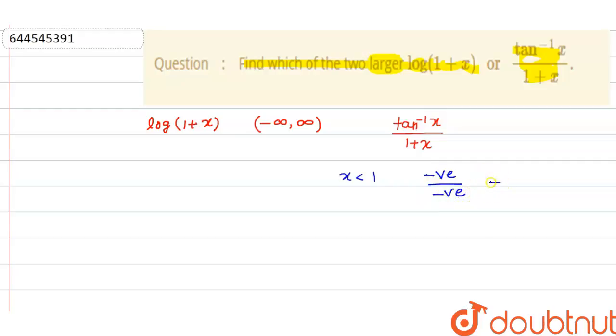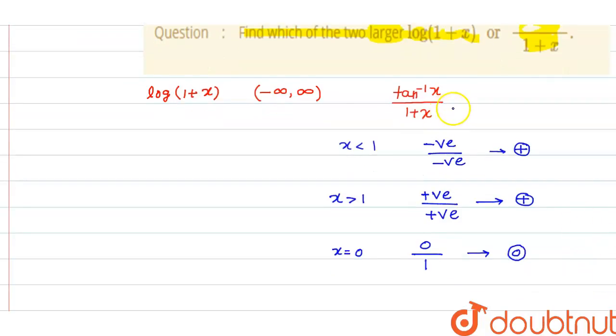Now see that if I substitute x greater than 1, this will be positive and this will be also positive, so that also becomes positive. Now again, if I substitute x equal to 0, for instance, this becomes 0 upon 1, so that will be 0.